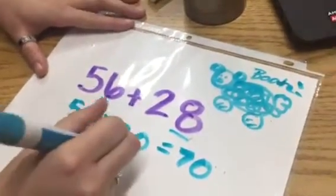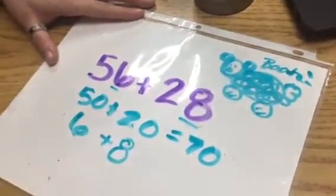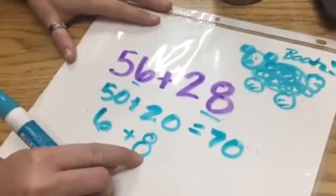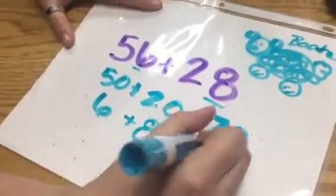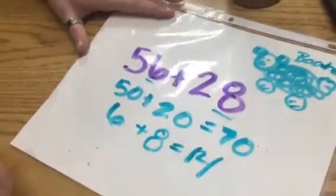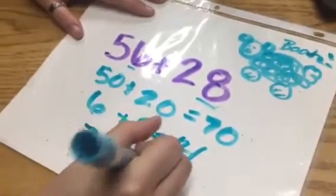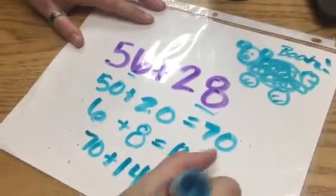Six plus eight. I know my doubles facts, Mrs. Sexton. I know that six plus six is 12. Plus two more is 14. Great. Now all I need to do is combine 70 and 14. Simple Simon is 84.